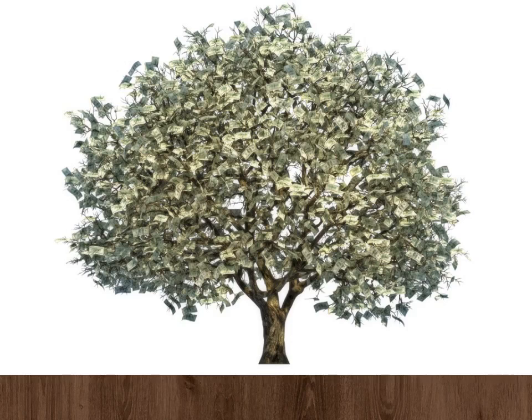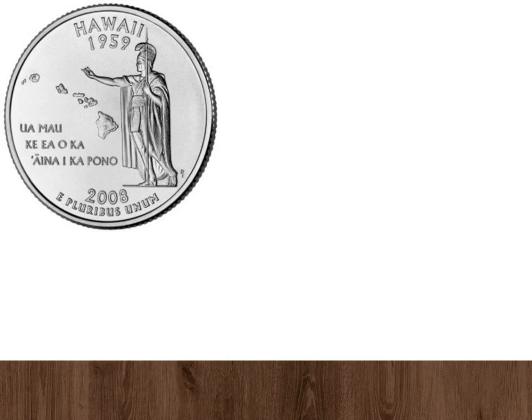And here's a quarter. So, interesting fact about the quarter, it has 119 grooves on the circumference. So if you were to count every one of these little grooves on here, see how there's little tiny grooves, I'm not even doing a good job marking them, but if you were to count them all around, there's 119 grooves. And a dime has one less. So a dime has 118. You'll have to check that sometime and see if that's true.